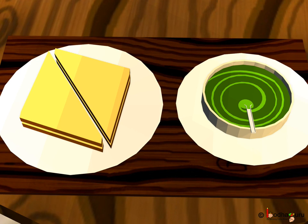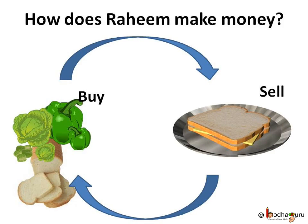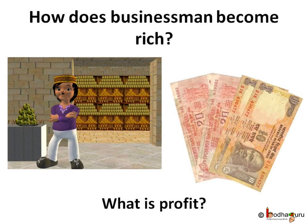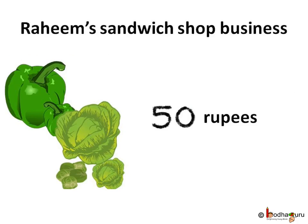How does he manage to make money for his family, shop, rent, etc.? People say businessmen make profits to be rich. But what is profit? How to make profit? Let us see how Rahim does his business.